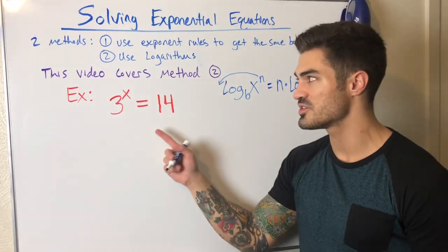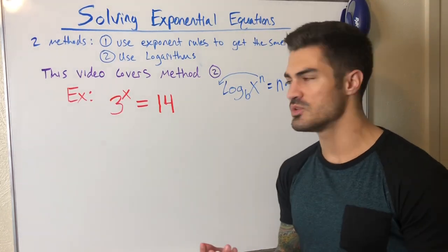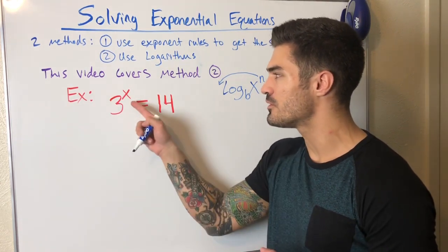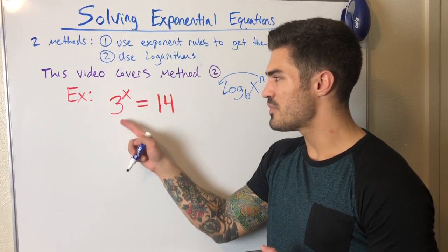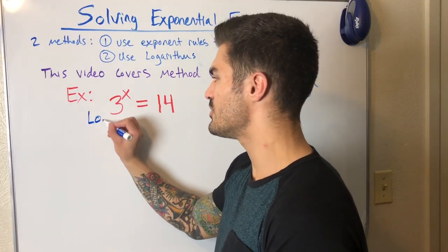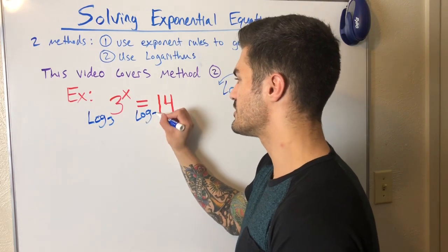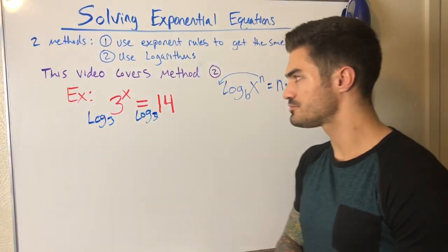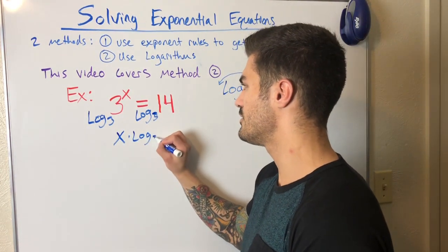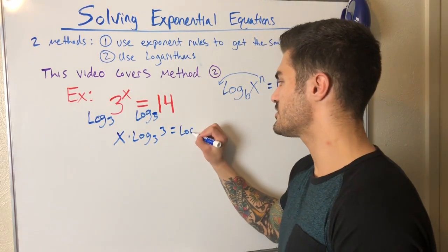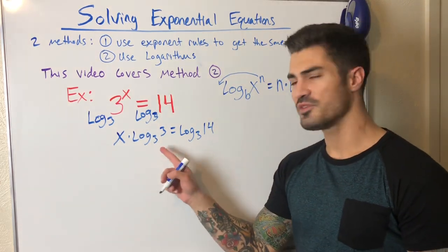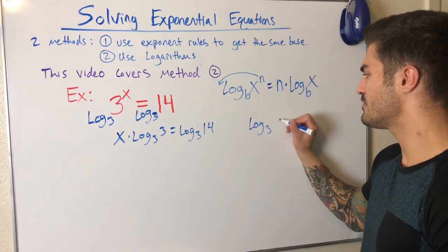So if we log both sides and bring X out in front, that's exactly what we'll do. What log base should we use? In general, when I have 3 to the X, the variable is being raised by base 3, so I match my logarithm base with my exponential base. I'm taking log base 3 of both sides, so X comes out in front multiplied by log base 3 of 3, equals log base 3 of 14.